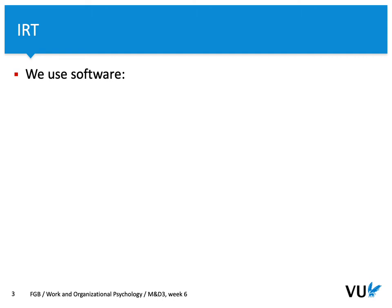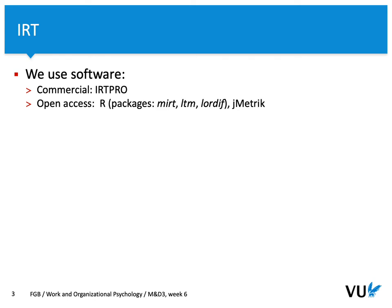IRT is not an easy procedure to implement. We may use different types of software. We can use commercial ones, which are quite expensive. But we can also use open-access R, or the user-friendly JMetric. JMetric is available for different platforms — Windows or Mac — and today I'm going to show you some examples from JMetric.